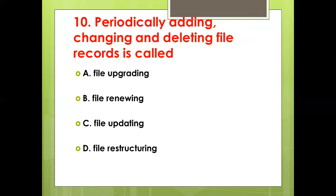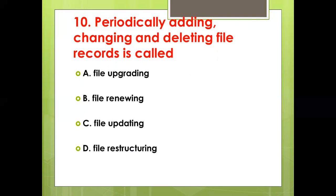Tenth bit: Periodically adding, changing, and deleting file records is called — Option A: File Upgrading. Option B: File Renewing. Option C: File Updating. Option D: File Restructuring. Answer: Option C, File Updating.